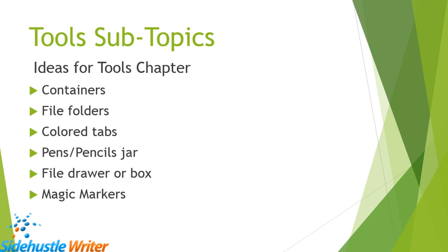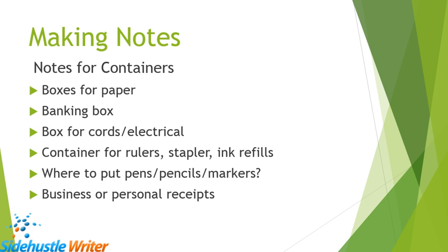Each one of these subtopics is going to have its own little section within your chapter. The last thing you have to do is just jot down some notes under each one of those subtopics of the things that you want to remember to add. So like on the containers section, I want to remember to talk about personal and business receipts. I want to remember to talk about a box or some kind of container for all my electrical cords, my computer, my extra USB cables, whatever. It's just notes that you've jotted down.